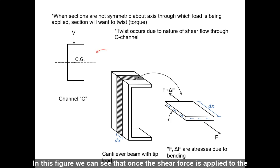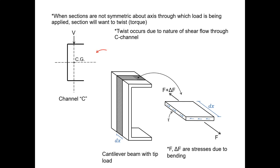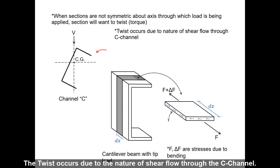In this figure, we can see that once the shear force is applied to the cantilever beam, the beam will want to twist and will end up looking like this. The twist occurs due to the nature of shear flow through the C channel.